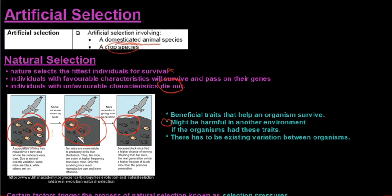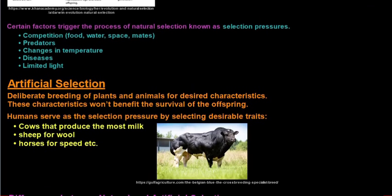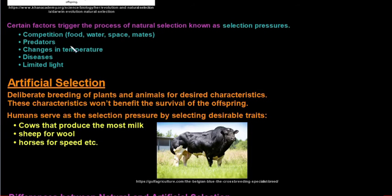Which means that the white mice in that situation would be able to pass on their specific traits. Now there has to be existing variation between the organisms. So in a population, you'll have great variation in order for natural selection to occur.